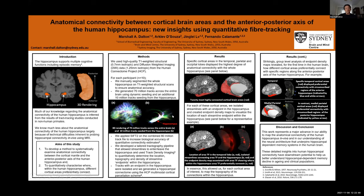We generated an additional 10 million tracks seeding from the hippocampus itself. Importantly, we developed a tractography pipeline specifically tailored to track streamlines into the hippocampus and quantitatively measure the location and density of streamline endpoints using track density imaging. In essence, this allowed us to visualize the spatial distribution and density of hippocampal endpoints associated with each cortical area.